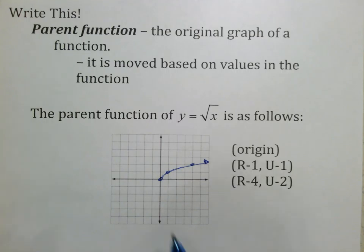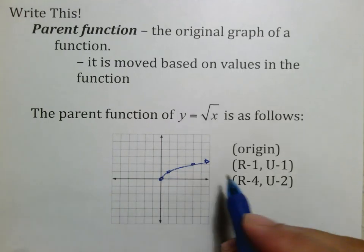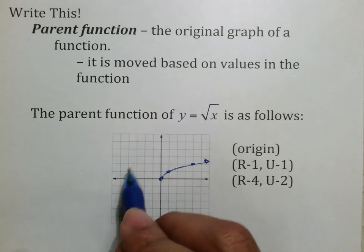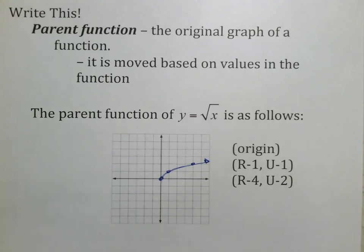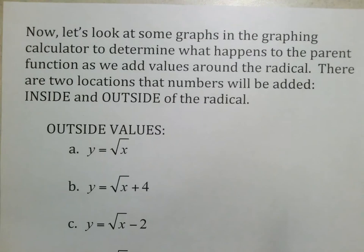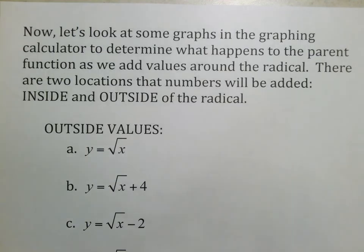All that's going to happen is you're either going to use these three points, or you're going to move it down or up or left or right. That's really what this lesson is about—how does this thing move whenever numbers are included? Real fast, let's look at some graphs on the graphing calculator to determine what happens to the parent function.